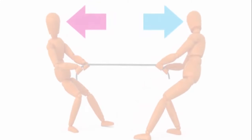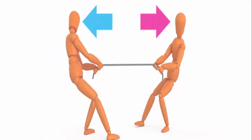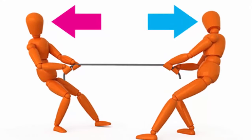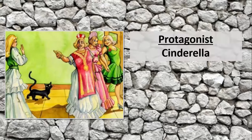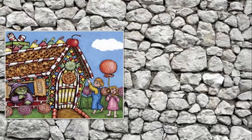The protagonist and antagonist are often complete opposites of one another; however, they can both be complex characters. There are many classic examples of heroes and villains that fill these roles in fairy tales. For example, in Cinderella, the evil stepmother and stepsisters are very cruel to Cinderella. Cinderella is the protagonist, while the stepmother and stepsisters are antagonists.